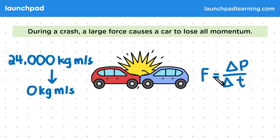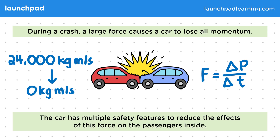This is dangerous, as it will affect the passengers inside and cause them harm. For this reason, the car has multiple safety features to reduce the effects of this force on the passengers inside. We can't change the momentum lost in a crash — it will always go from a high value to zero. However, we can change the time taken for this momentum to be lost. If this increases, then the equation shows us that the force will decrease to a safer value. Let's take a look at some of the ways this can be done.